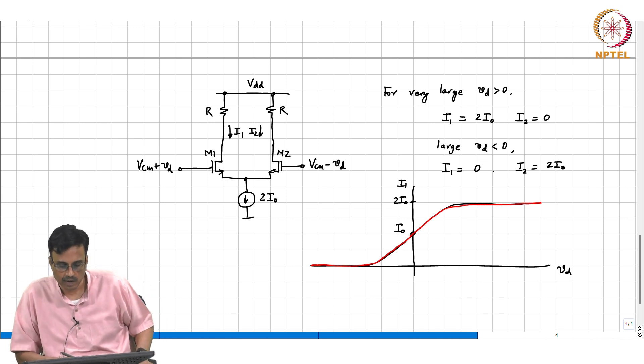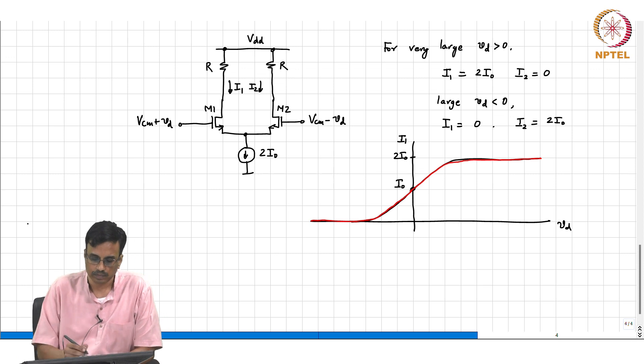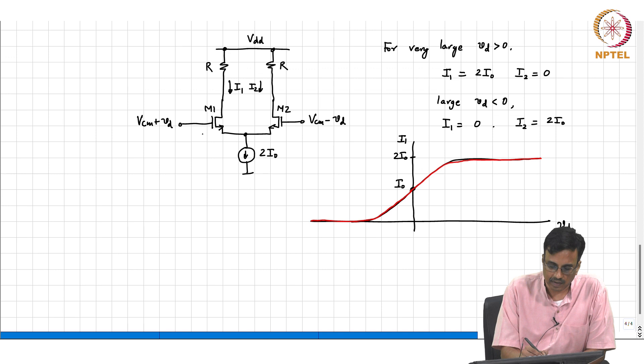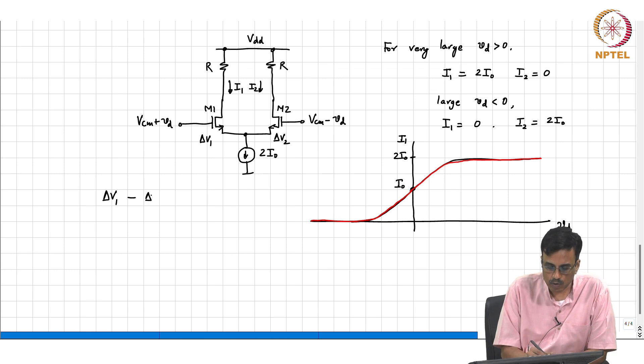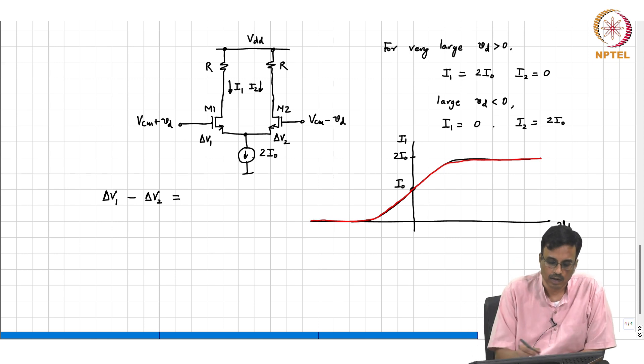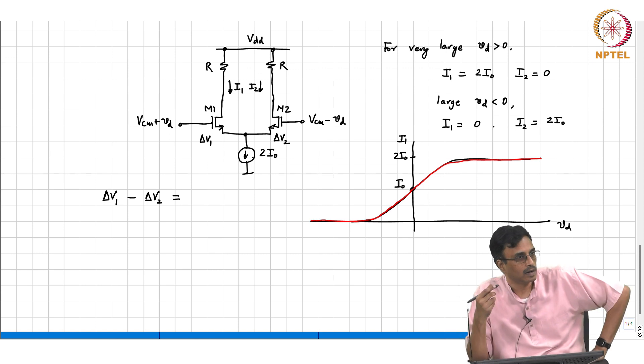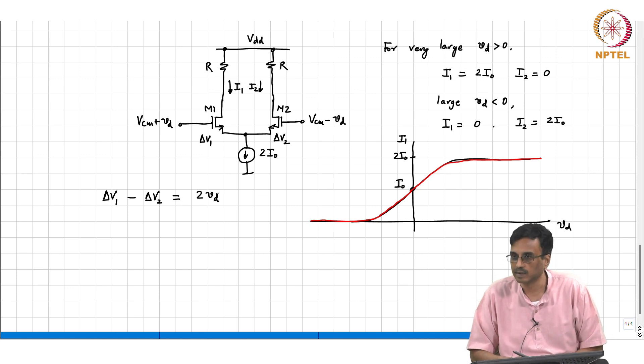Let's quickly get through the algebra. What are the constraints? Let's assume the overdrive of this transistor is delta V1, the overdrive of M2 is delta V2. So delta V1 minus delta V2 equals 2 Vd, and that's regardless—as long as the transistors are not cut off. This is fine, assuming no devices are off, otherwise there won't be any delta.